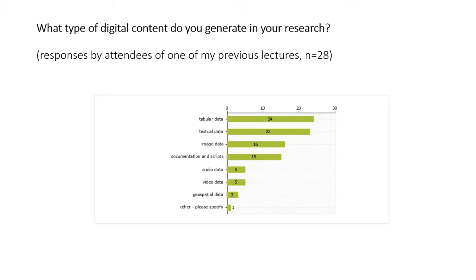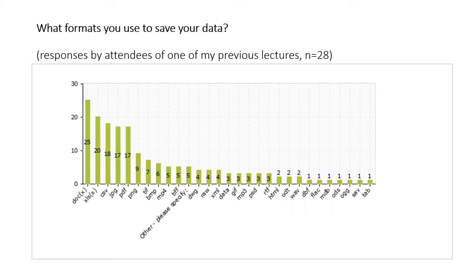Actually in your case it's different — textual data is on top at 63%. Multiple responses were possible, but in this classroom almost two-thirds of you said you generate textual data in your research. Tabular data is in second place, followed by image data, then documentation and scripts, audio data, geospatial data, and others.